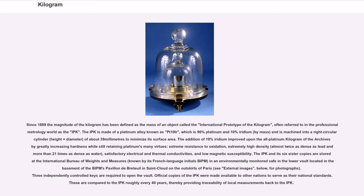Since 1889 the magnitude of the kilogram has been defined as the mass of the International Prototype of the Kilogram (IPK). The IPK is made of a platinum alloy known as Pt-10Ir — 90% platinum and 10% iridium by mass — machined into a right circular cylinder (height equals diameter) of about 39 millimeters to minimize its surface area. The addition of 10% iridium greatly increased hardness while retaining platinum's virtues: extreme resistance to oxidation, extremely high density (more than 21 times as dense as water), satisfactory electrical and thermal conductivities, and low magnetic susceptibility. The IPK and its six sister copies are stored at the BIPM in an environmentally monitored safe in the basement of the BIPM's pavilion in Saint-Cloud on the outskirts of Paris, requiring three independently controlled keys to open the vault.